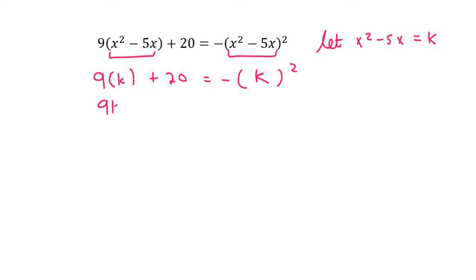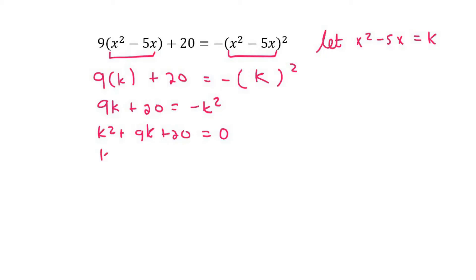I'm now going to say 9k plus 20 equals negative k². I'm going to bring the k² over to the left. This one factorizes nicely as k plus 4, k plus 5.